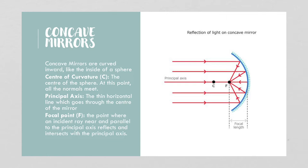Concave mirrors are curved inward — they're like the inside of a sphere. If you cut a ball in half, you'd be looking at the inside of the ball. The center of curvature is where the center of the sphere would be, right in the middle. We aren't looking at the entire sphere, so sometimes that can be confusing.